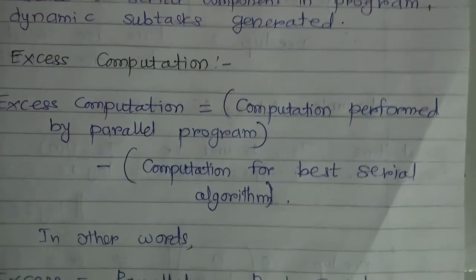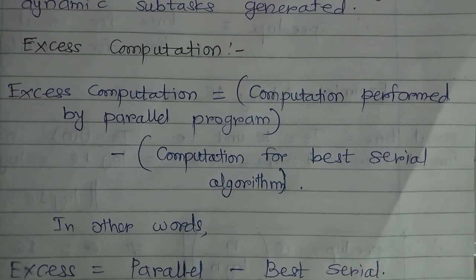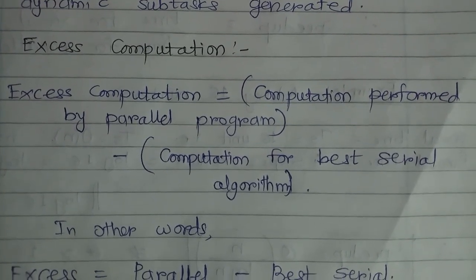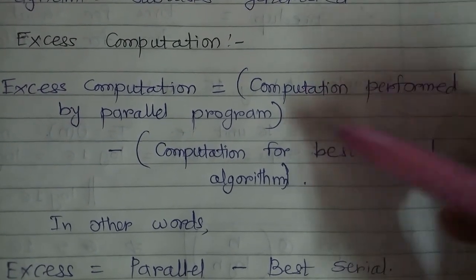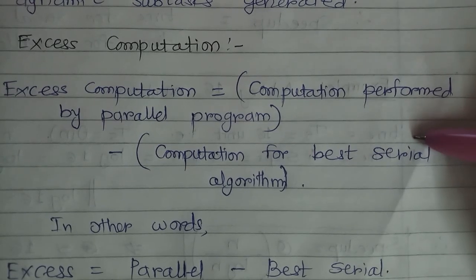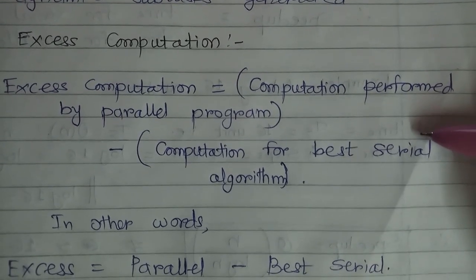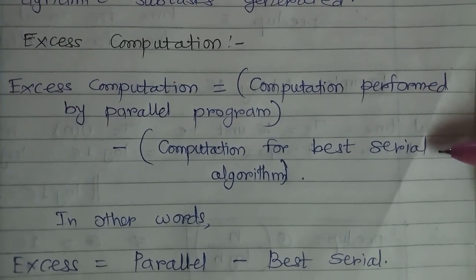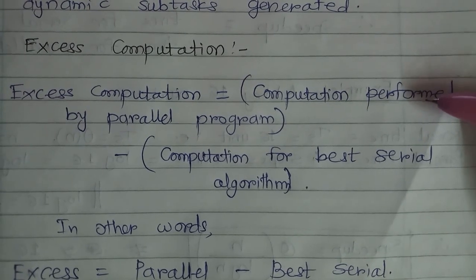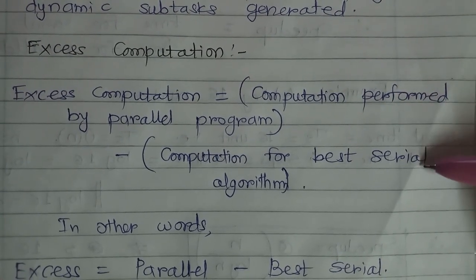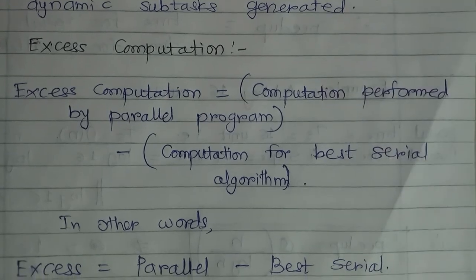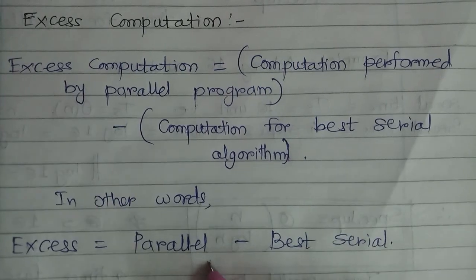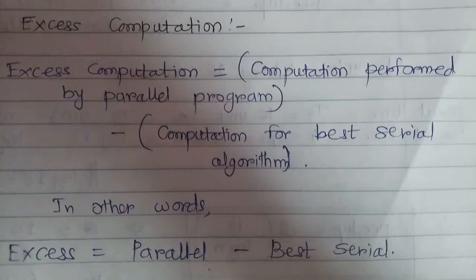The third source is excess computation. Excess computation is the computation performed by a parallel program minus the computation of the best serial algorithm. We always compare the parallel program against the best serial one. Because of various factors, a parallel program takes more time than the best serial algorithm, and that net extra time is called excess computation. In other words, excess computation equals parallel time minus best serial time.